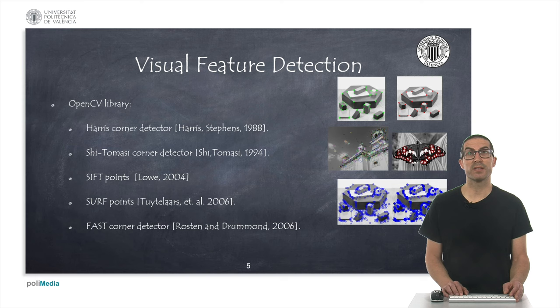For detecting visual characteristics, I recommend using algorithms implemented in the well-known OpenCV library. These techniques have been widely used and accepted by the artificial vision community. Specifically, I mention algorithms such as the Harris Corner Detector or Shi-Tomasi Corner Detector. The latter improves the function to evaluate candidate points for tracking.